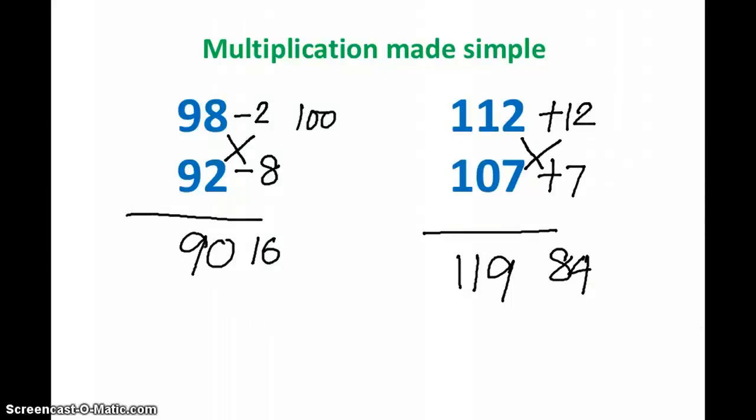So these are the small and simple steps that you need to follow to multiply any number nearing 200, 1000, 100, whatever it is. So I will repeat the steps again. Let's go through the process of multiplying 98 into 92. So 98 is 2 less than 100, that is the first thing we should do.